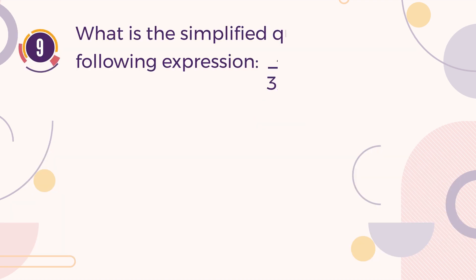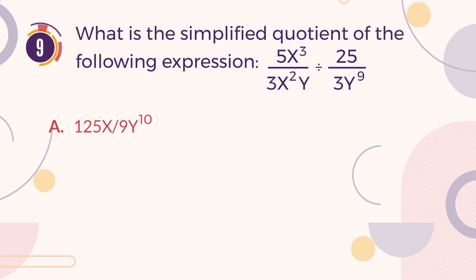Number 9. What is the simplified quotient of the following expression? 5 times X cubed divided by 3 times X squared multiplied by Y, then divided by the fraction 25 divided by 3 times Y to the power of 9. A. 125 times X divided by 9 times Y to the power of 10. B. X divided by 5 times Y to the power of 8. C. 5 divided by X times Y to the power of 8. D.